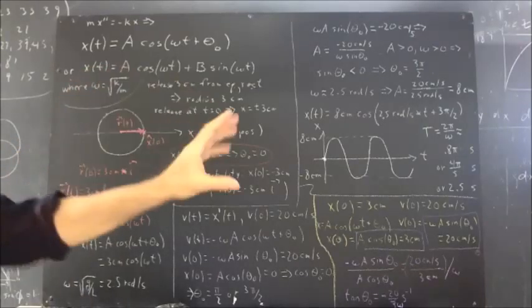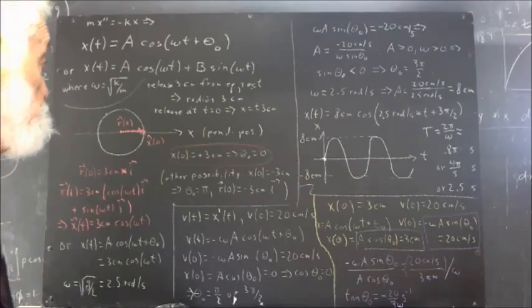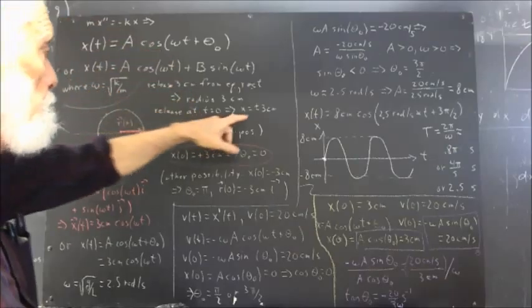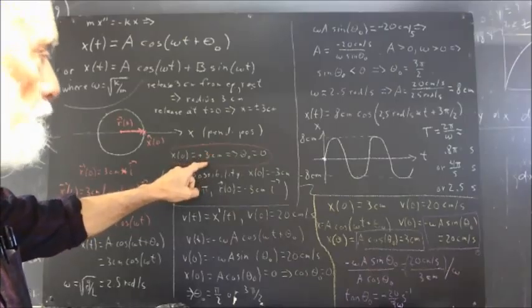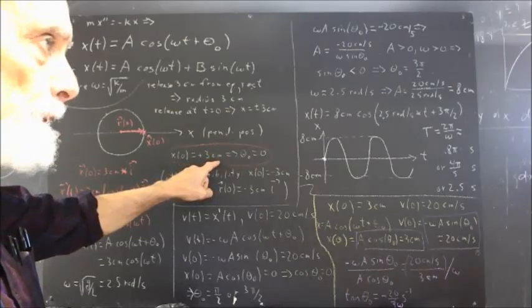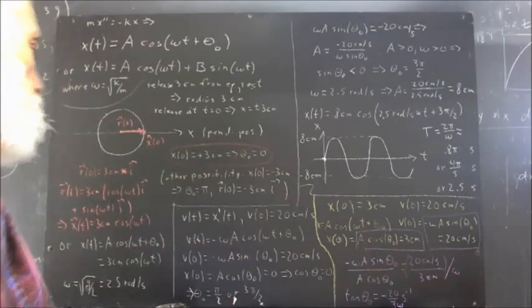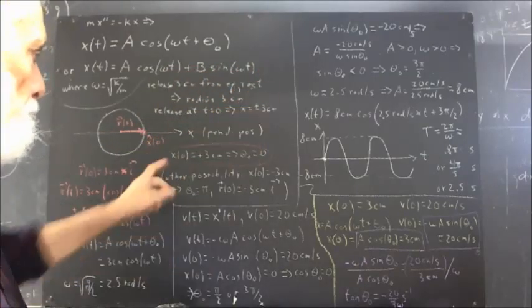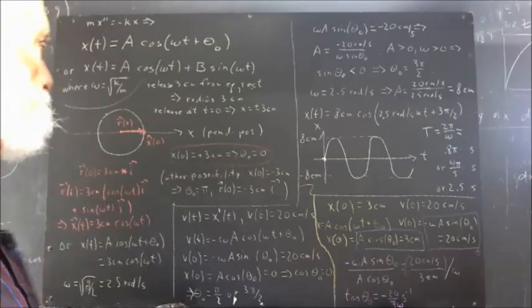We'll see how that works out in a number of examples on this worksheet. We're releasing three centimeters from equilibrium — specifically at x = +3 cm. If we release at x = +3 cm, it turns out that θ₀ has to equal zero. We could figure that out analytically, but in this case we're just going to state that θ₀ has to be zero.